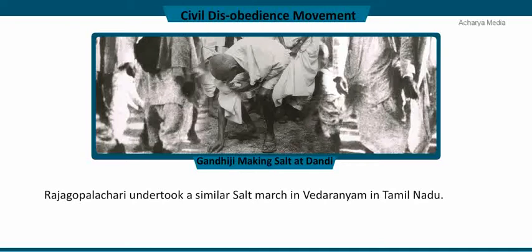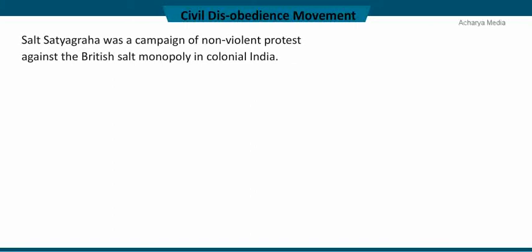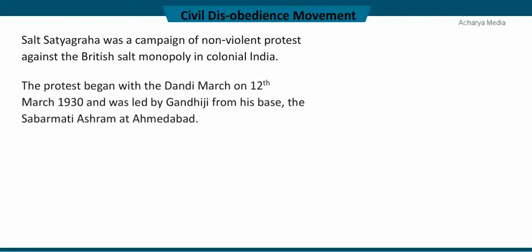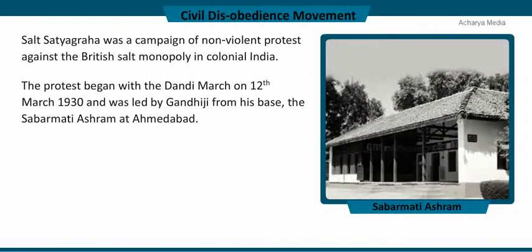Rajagopalachari undertook a similar salt march in Vedaranyam in Tamil Nadu. Around 90,000 satyagrahis were arrested by the British. The salt satyagraha was a campaign of non-violent protest against the British salt monopoly in colonial India. The protest began with the Dandi March on 12 March 1930, led by Gandhiji from his base, the Sabarmati Ashram at Ahmedabad. He walked barefoot with a large number of satyagrahis for 24 days and covered 390 kilometers.